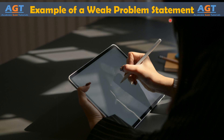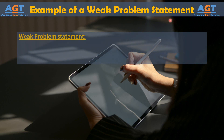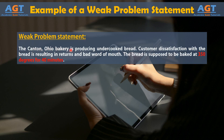In the last lecture we looked into the example of a strong problem statement. Now let's look into the example of a weak problem statement. The problem statement says: the Canton, Ohio bakery is producing undercooked bread. Customer dissatisfaction with the bread is resulting in returns and bad word of mouth.